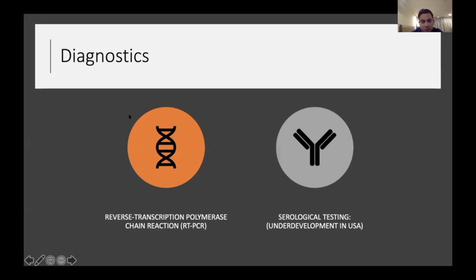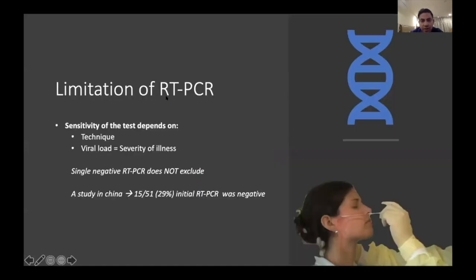For diagnosis, two modalities are available: the reverse transcriptase polymerase chain reaction (RT-PCR) of a nasopharyngeal swab, and serological testing which is a blood test still under development in the US, though Abbott has started sending some serological testing machines to hospitals. The sensitivity of RT-PCR is reported at about 71 percent. In one Chinese study of 51 patients, 15 initially had a negative test but tested positive two days later.